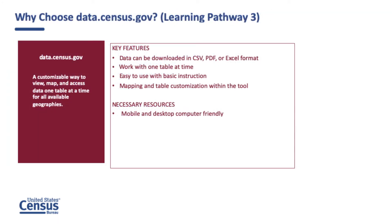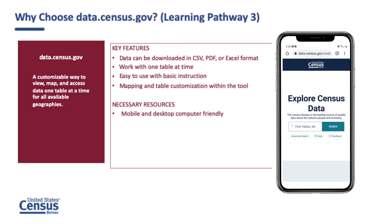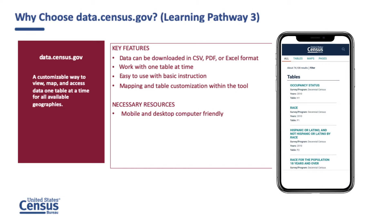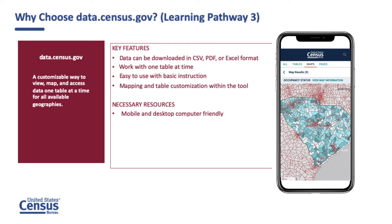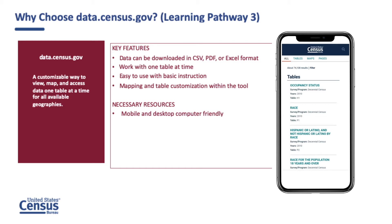Data.census.gov offers the most comprehensive method to access and use 2020 census data. It is a midway point between ease of use and the ability to download data. It gives you a customizable way to view, map, and access data one table at a time for all available geographies. Data.census.gov is the Census Bureau's centralized place to get demographic, housing, and economic data. Data are offered in a tabular format but can also be viewed using a map. It allows you to select a variety of geographies for all 2020 census topics as individual tables. You can easily view data from a mobile phone as well as a desktop.